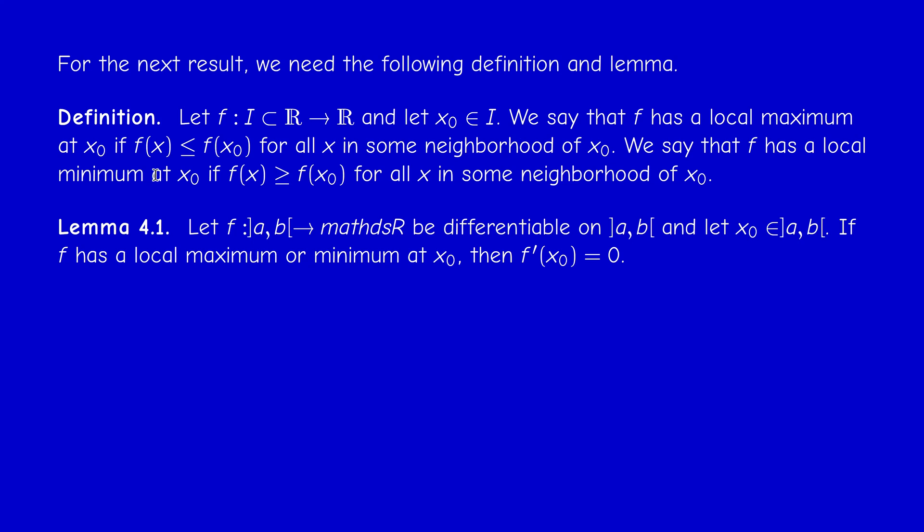Therefore, when you let h tend to 0, you get a double inequality: from one hand it should be less or equal to 0, from the other hand bigger or equal to 0. So it must be equal to 0.